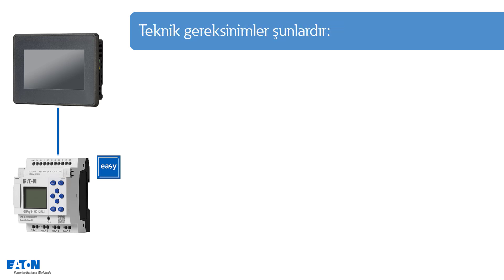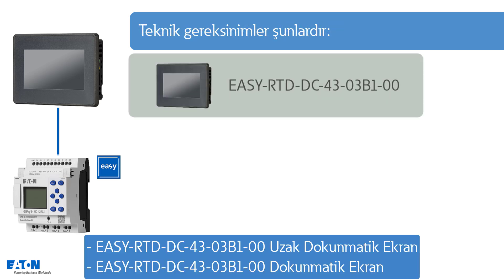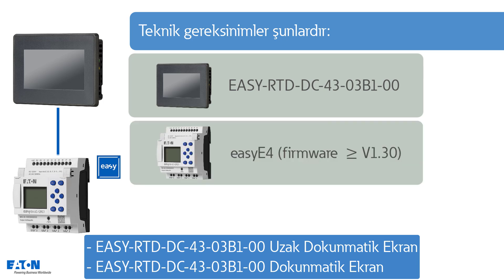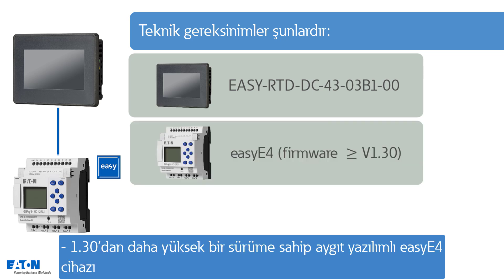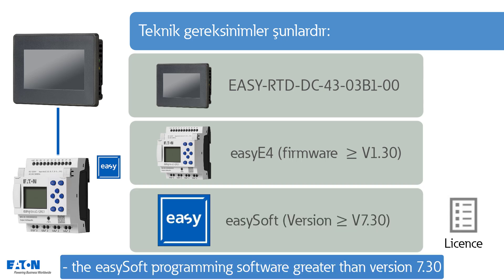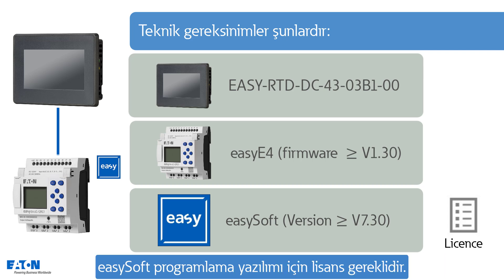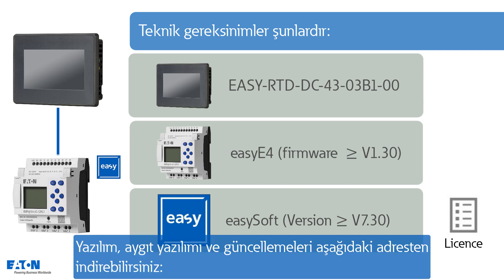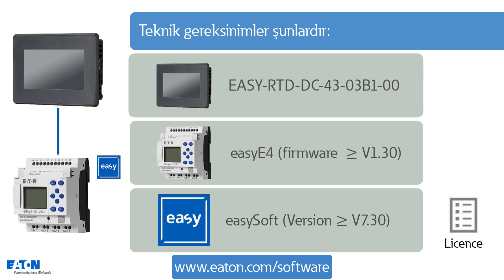The technical requirements are: a remote touch display EZ-RTD DC4303B100, an EZ-E4 basic device with firmware version greater than 1.3, and the EZ-Soft programming software greater than version 7.3. A license is required for the EZ-Soft programming software. Software, firmware and updates can be downloaded from www.eaton.com.